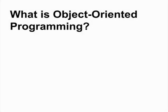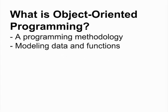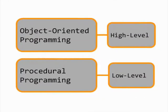Object-oriented programming is a programming methodology that focuses on modeling data and functions as objects. By contrast, procedural programming focuses on program execution statement by statement. In a way, object-oriented programming is more abstract, while procedural programming is closer to the raw machine instructions.